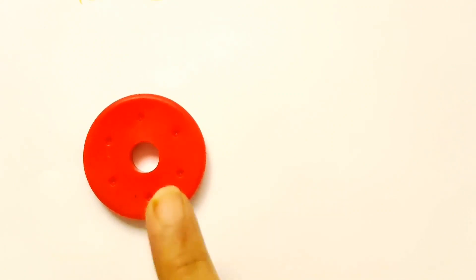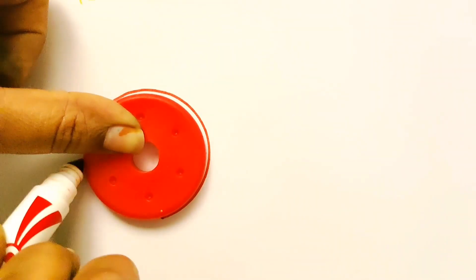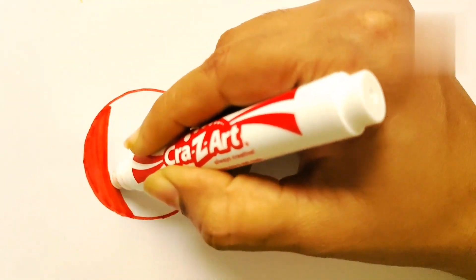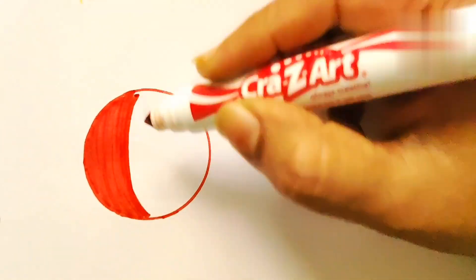This is a circle in red color. I have red color, and yes we will make a border. Let's paint the circle and put your sketch pen with me. Now getting my circle ready.